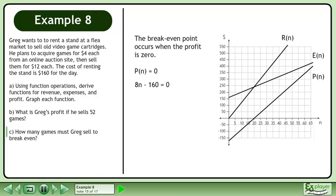Replace P(n) with 8n - 160. Isolate the term with n on the left side. Divide both sides by 8 to get n = 20. Greg will break even when he sells 20 games.